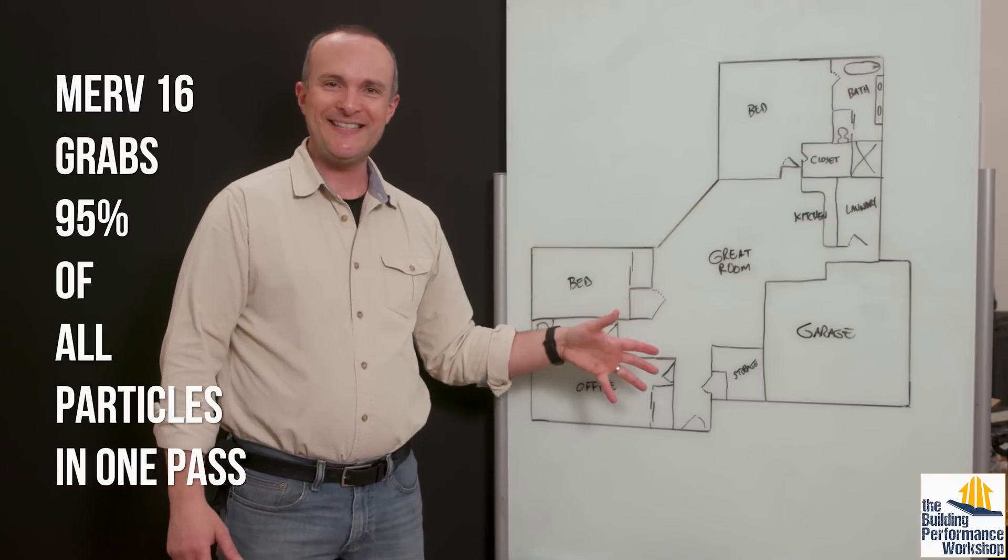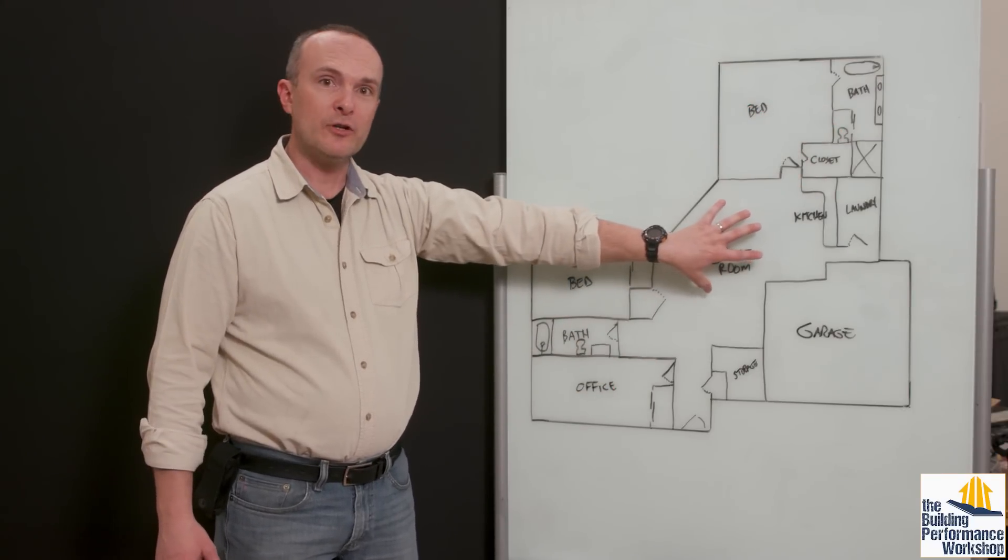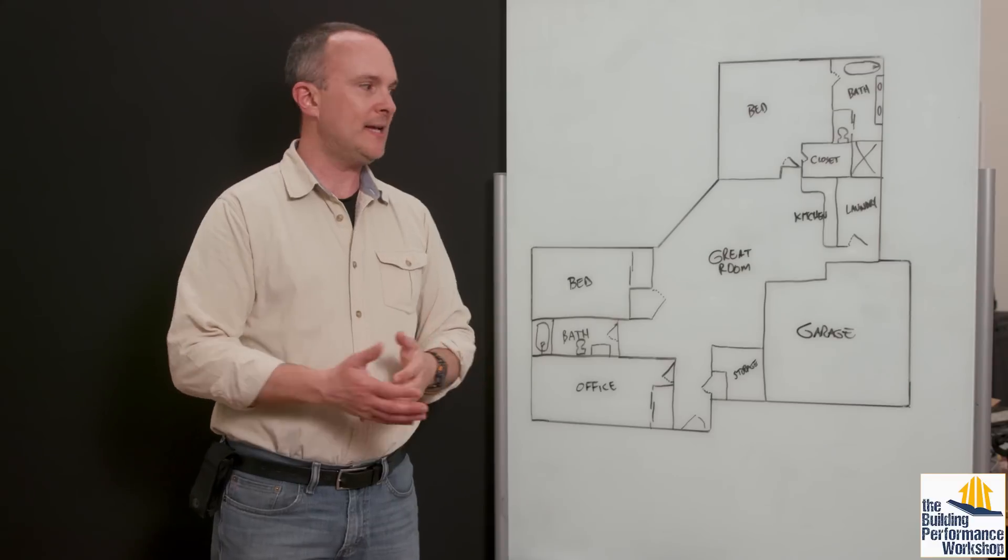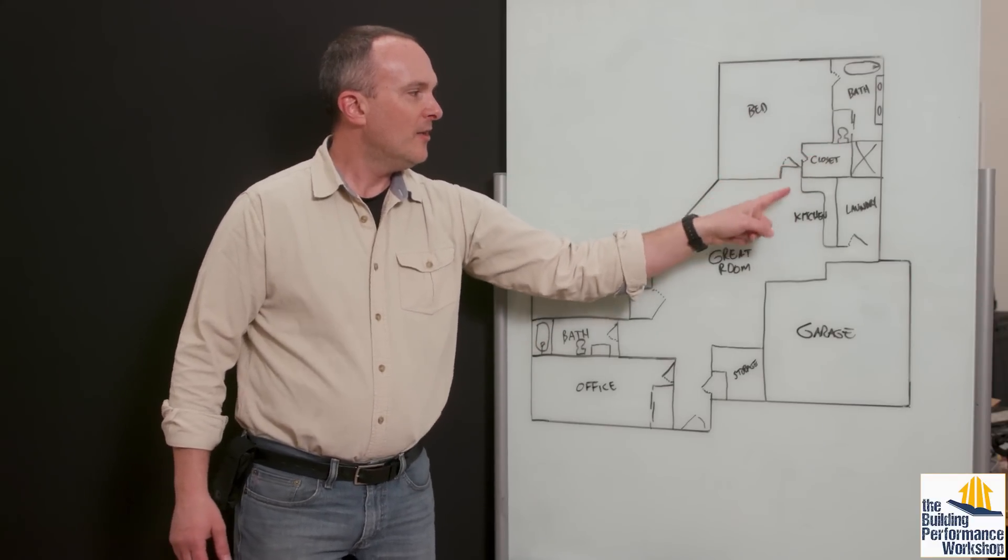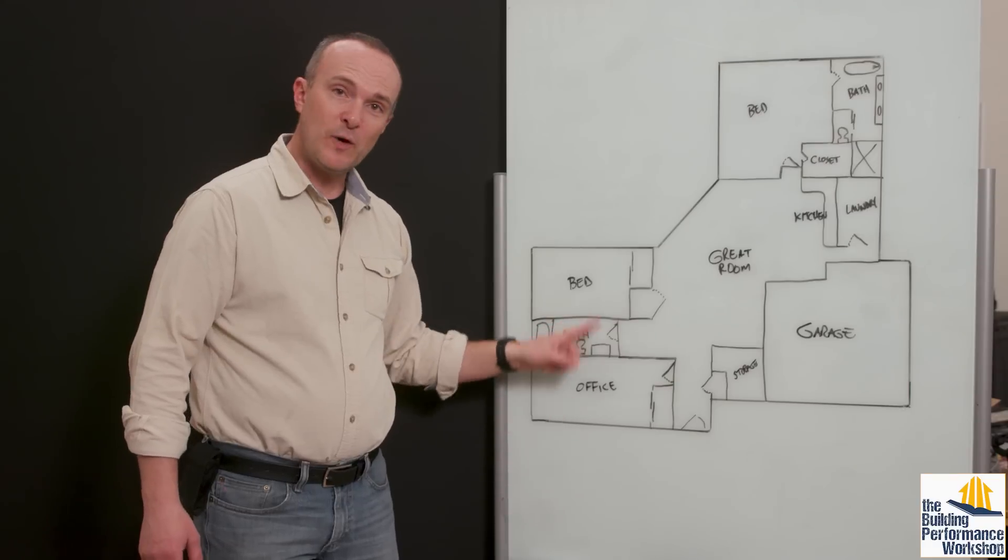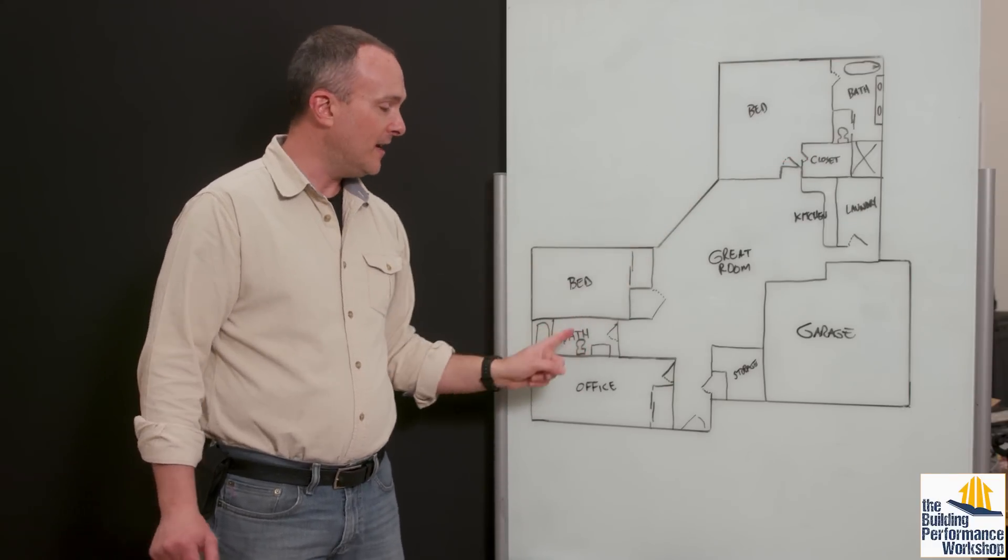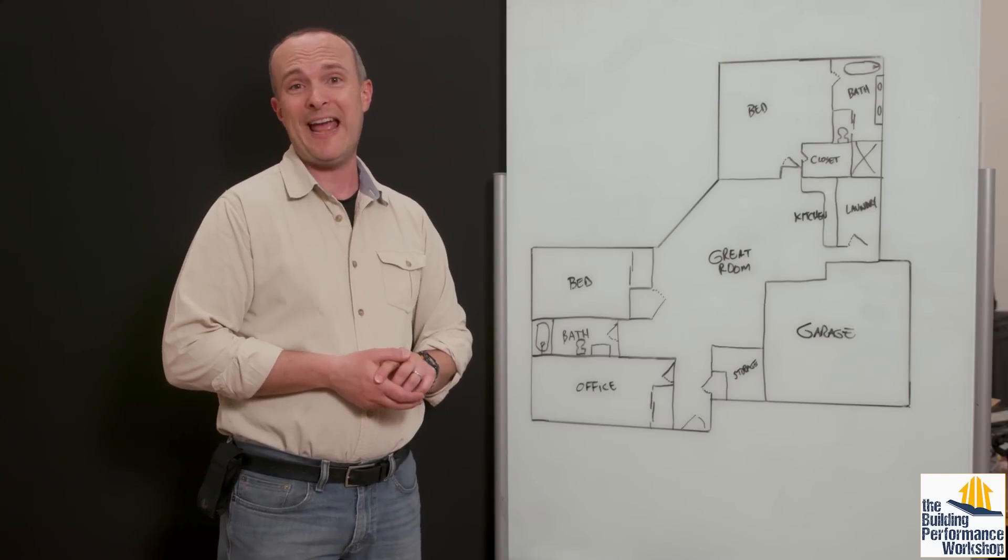So I can't use a MERV 16 on a ductless mini split. I'm going to have now a duct system over here. This room has vaulted ceilings. And I really wanted that in my design. How am I going to get a duct system from here through this vaulted ceiling over to this wing? I can't. So now I have two duct systems, one down here and one over here using the same example of the sizing of the one and a half tons.